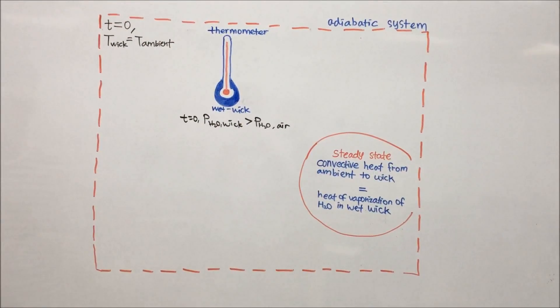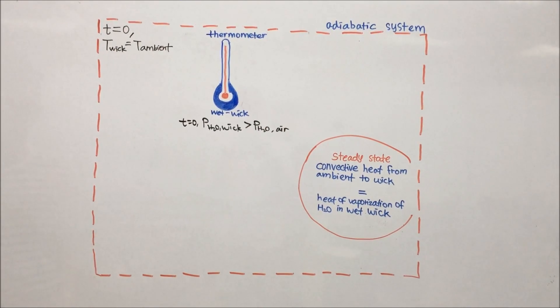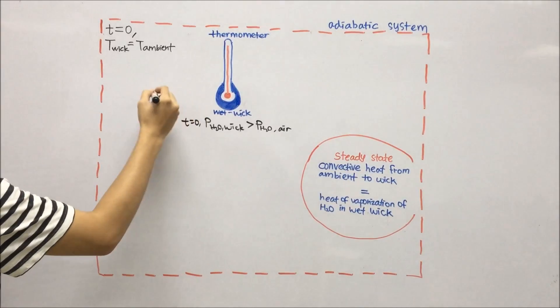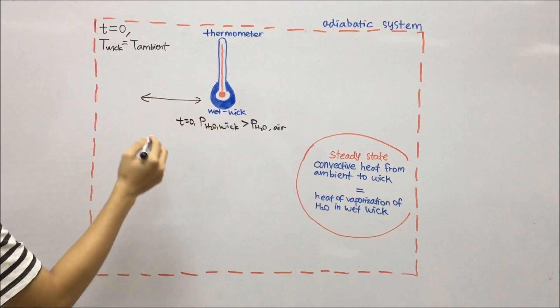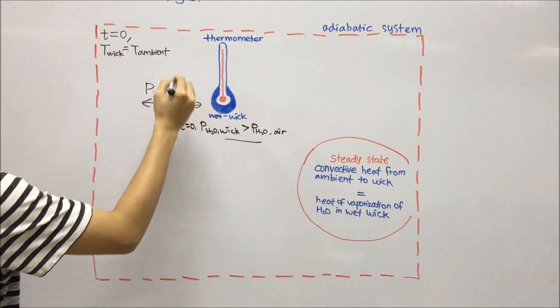We consider a thermometer with a wet wick in an adiabatic system. As the wet wick is saturated with water, the partial pressure in the wick is higher than that in the ambient. This creates a pressure gradient across the wick and ambient air.